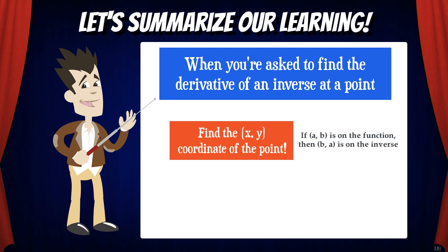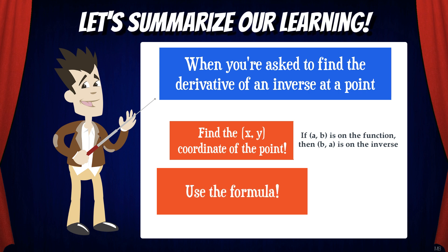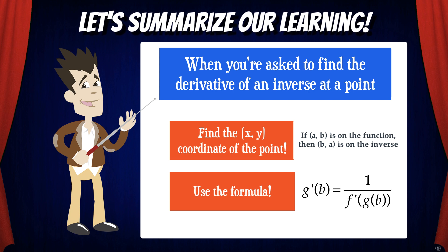If the point a, b is on the function, then the point b, a is on the inverse. Then we can use our derivative of inverse formula to help us solve. g prime of b equals 1 over f prime of g of b.